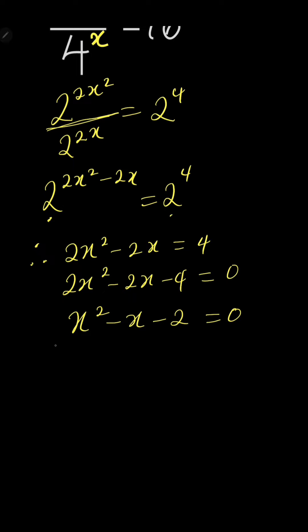Now this is a quadratic equation. To solve it, first put two brackets. Then ask yourself, what two numbers will you multiply to get minus 2, and if you add them, you get minus 1, which is the coefficient of x?